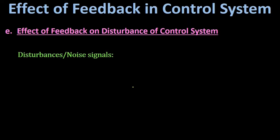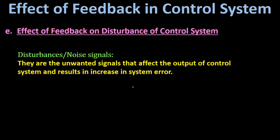Disturbances in a control system are also called noise signals. They are unwanted signals that affect the output of the control system and result in an increase in the system error. Therefore, to eliminate the effect of disturbance and to reduce the system error, the control system should be properly designed.